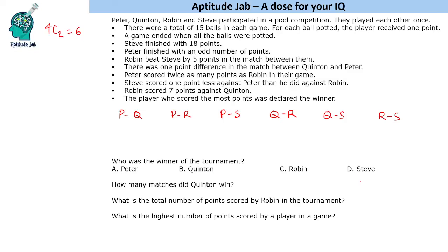Steve finished with 18 points and Peter finished with an odd number of points — these don't give us individual match info yet. Robin beat Steve by five points in their match. Since the total is 15, the score line must be 10-5, so Robin beat Steve 10-5.